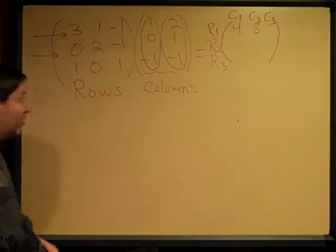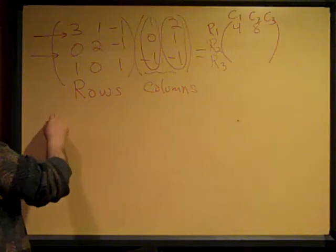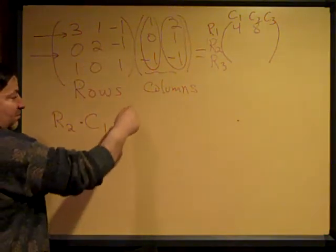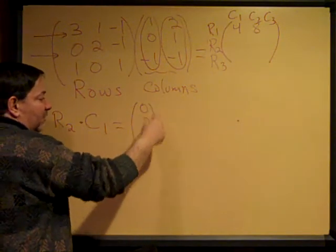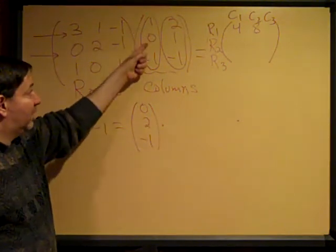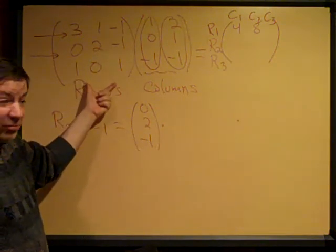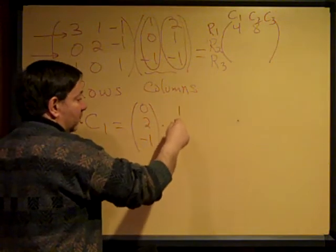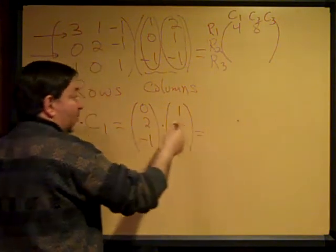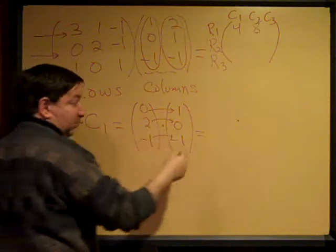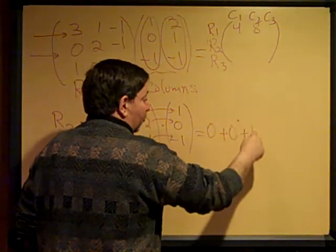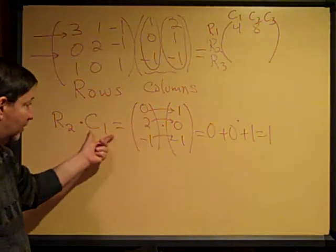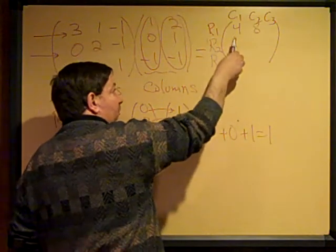Now I'm going to dot row 2 with all the columns I have. Row 2 dotted with column 1: row 2 is 0, 2, negative 1, dotted with column 1 which is 1, 0, negative 1. Remember, the first matrix you get the rows from, and the second matrix you get the columns from. Multiplying these two: 0 times 1 is 0, plus 0, plus 1 — that's 1. So where do I put this 1? Row 2, column 1. Right here.